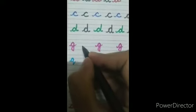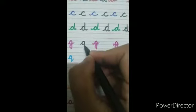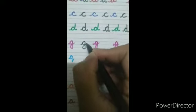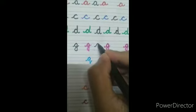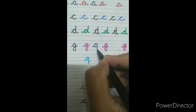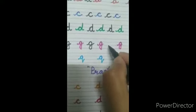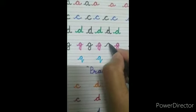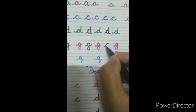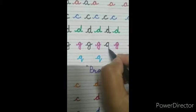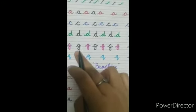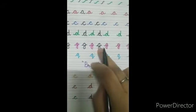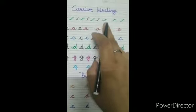We can make 'g' also — like a circle, go down and up with this pattern, then circle back, down and up. Now you can see we can make 'g' with this pattern.